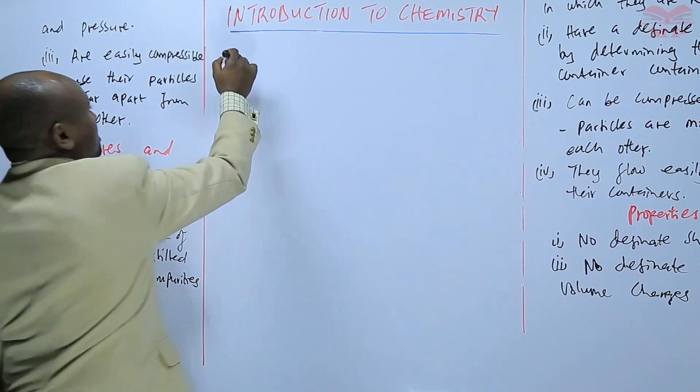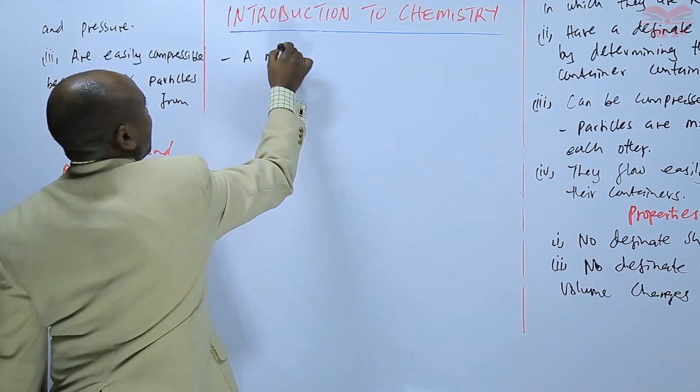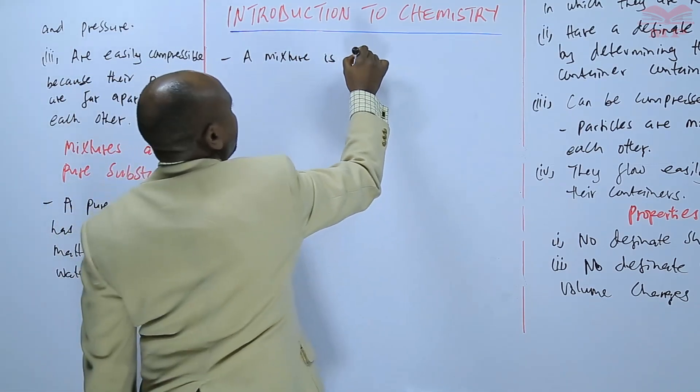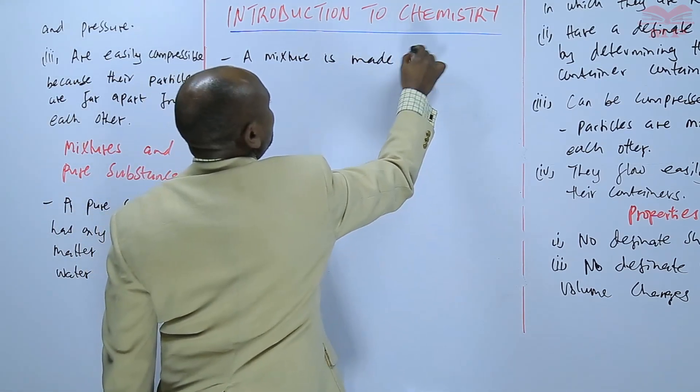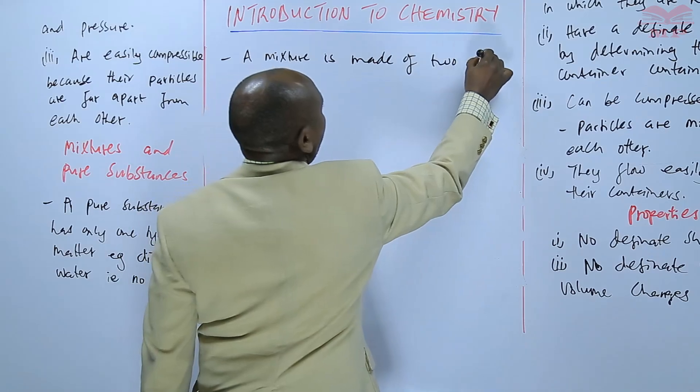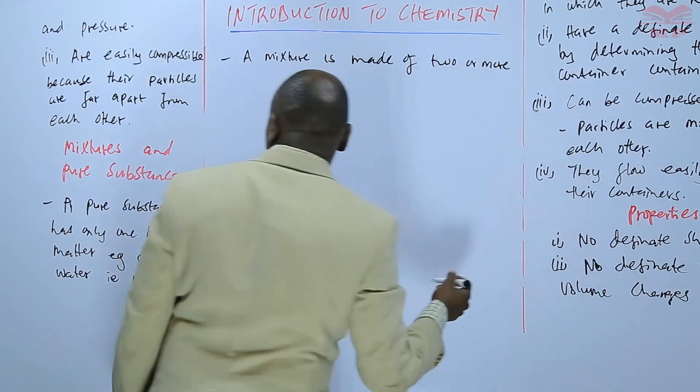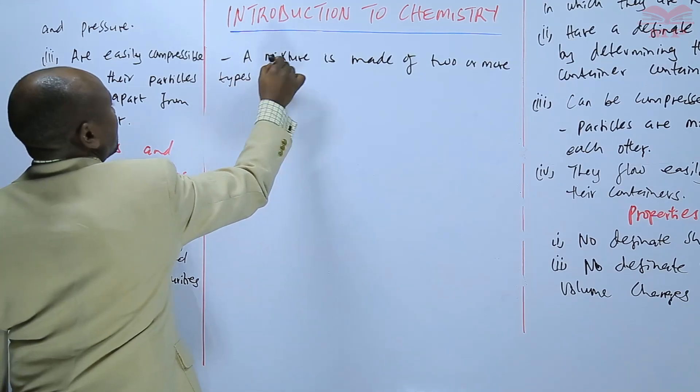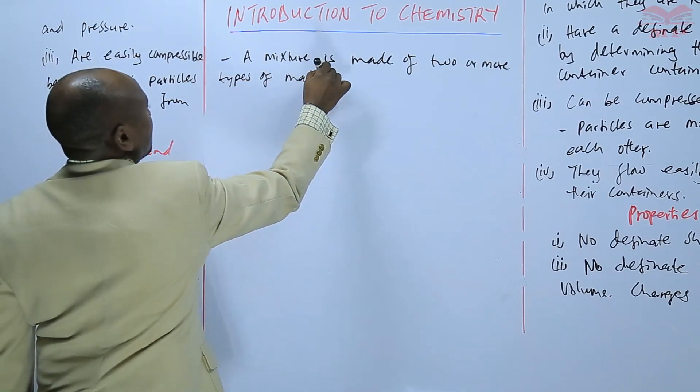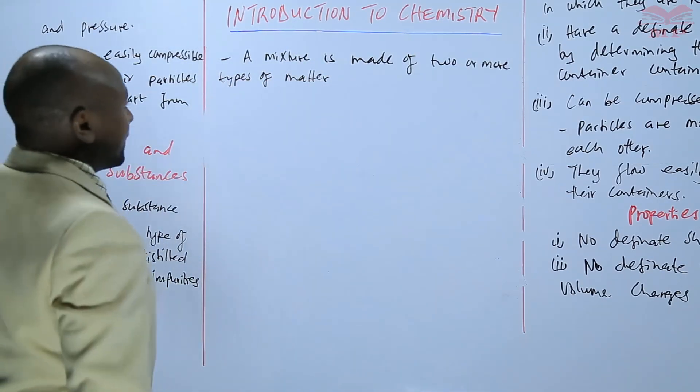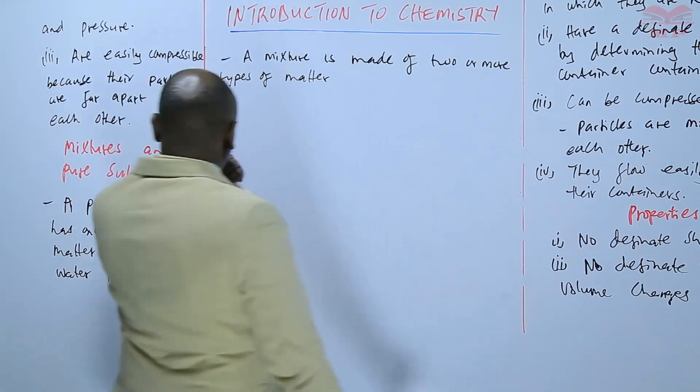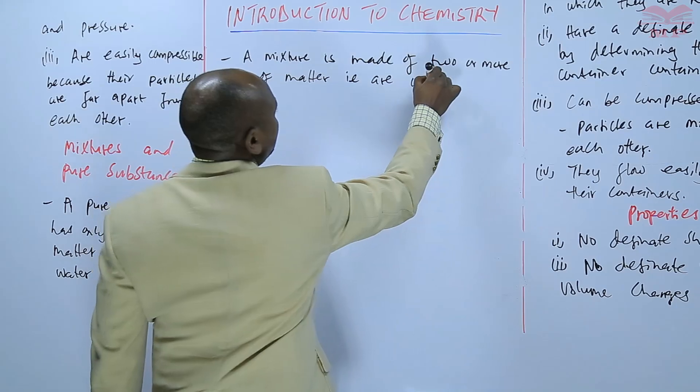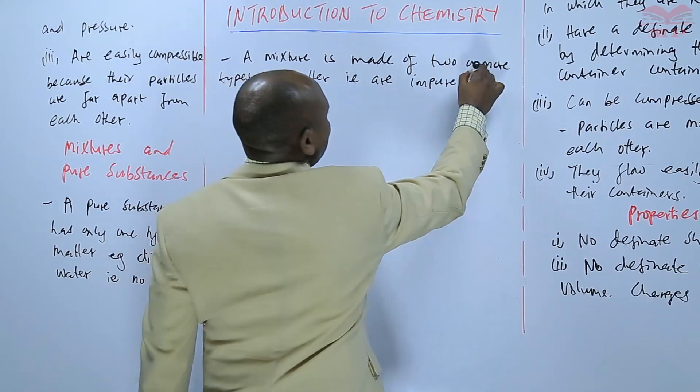The other type of matter is a mixture. And we say that a mixture is made of two or more types of matter. And we can say that mixtures are impure substances.